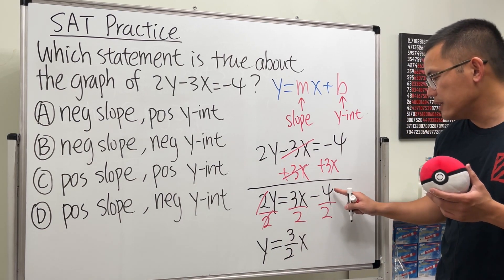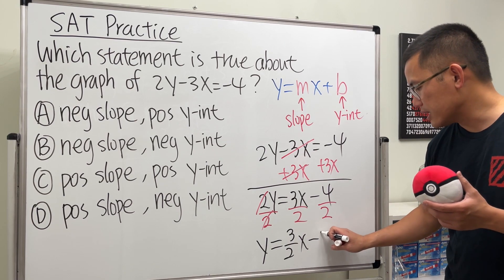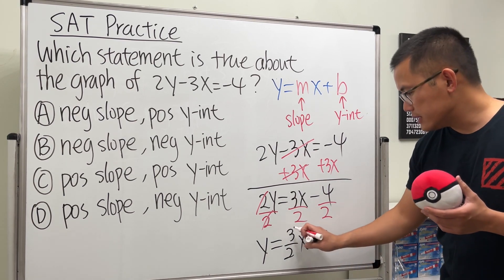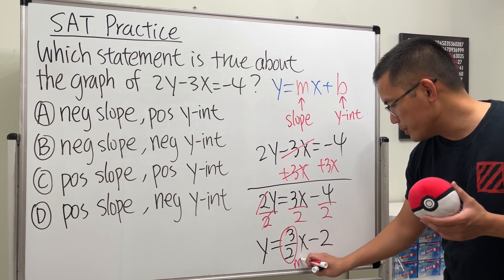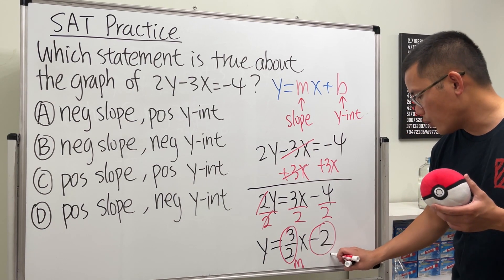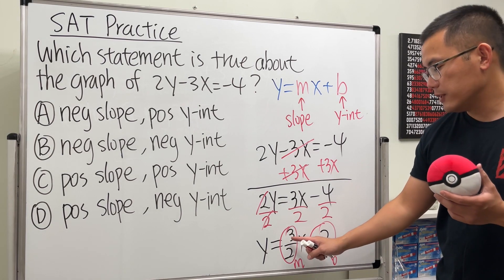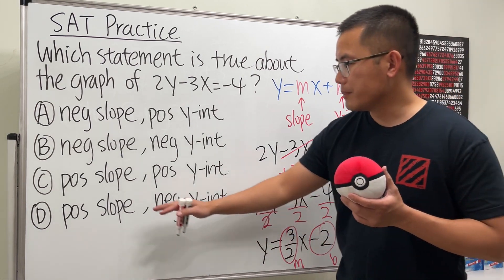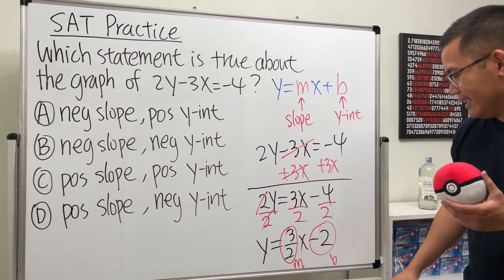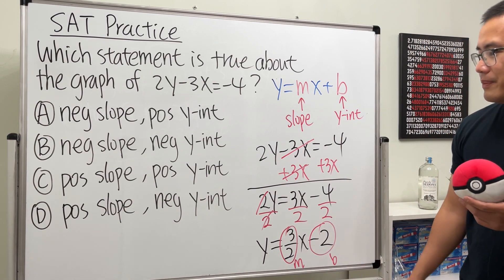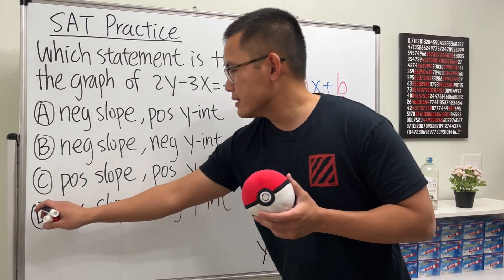So as we can see, here is the slope and here is the y-intercept. The slope is a positive 3/2, so we're talking about either this or that. The y-intercept is negative 2, so it's negative. Therefore, the answer is D: we have a positive slope and negative y-intercept.